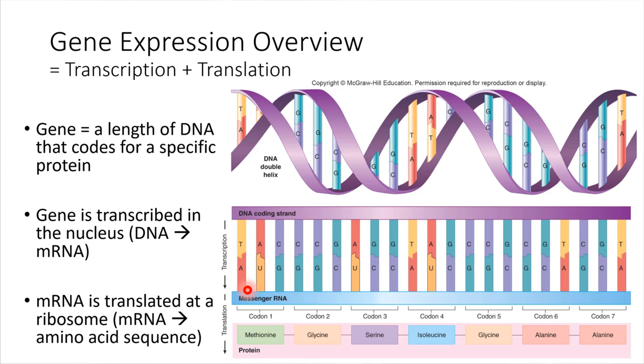And what ribosomes do is they read the message that's on the mRNA strand. They read it in sets of three. Each set of three nucleotides is called a codon, and each codon encodes for one amino acid. So the ribosome builds up this chain of amino acids, and then that can fold into a three-dimensional protein.